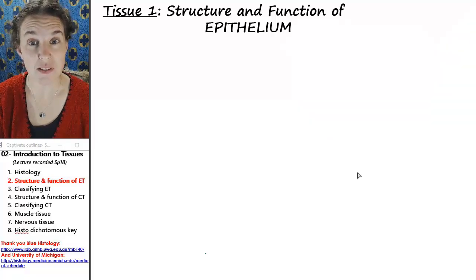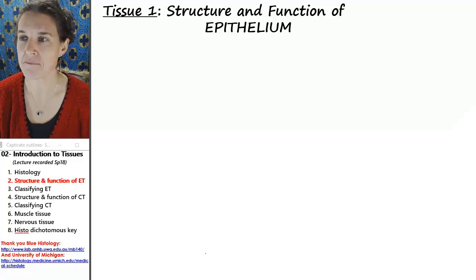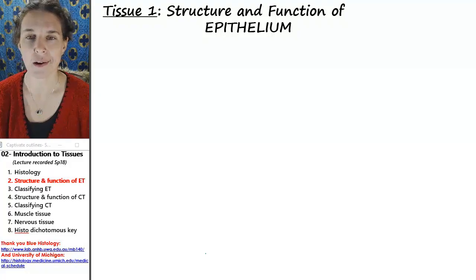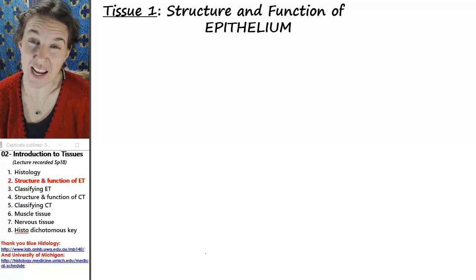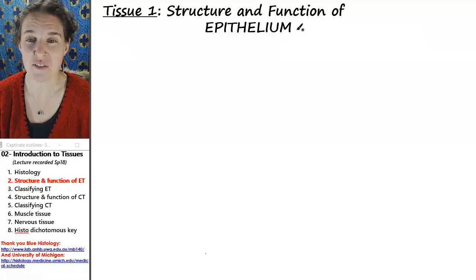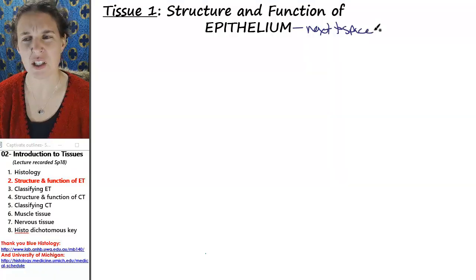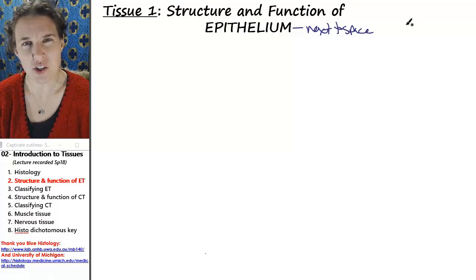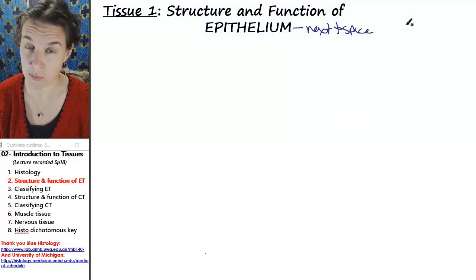We're going to start with epithelial tissue. And I already told you that epithelium is defined by the fact that it is found next to a space. Before we really look at the different kinds of epithelial tissues or what they do, I want you to think about why would there be a special tissue type lining spaces? And where are these spaces that we speak of?